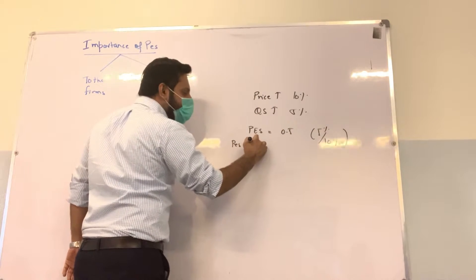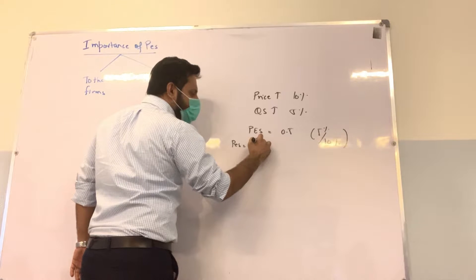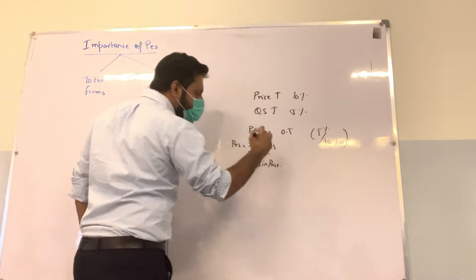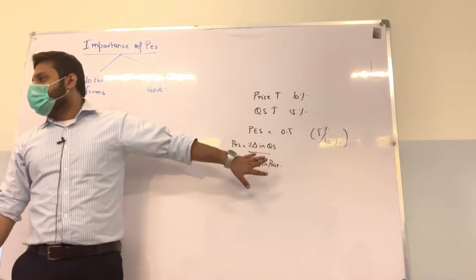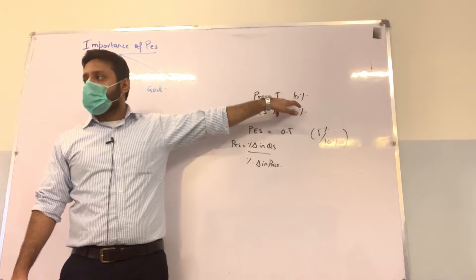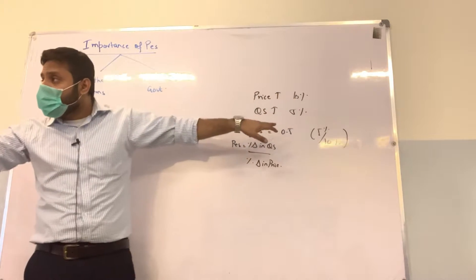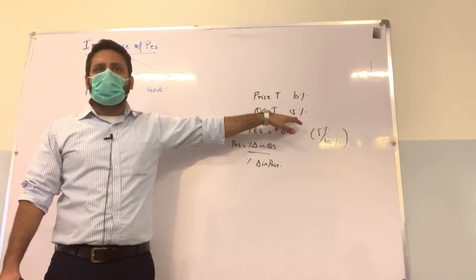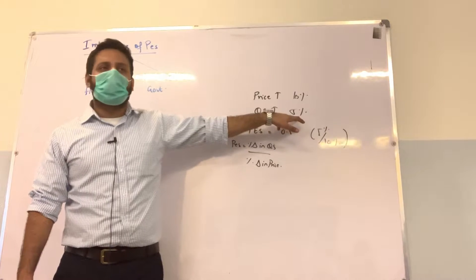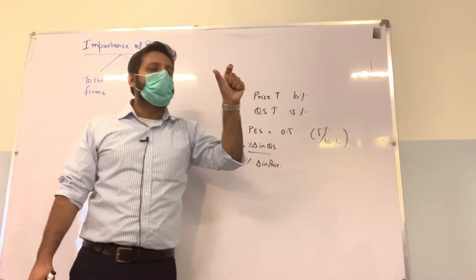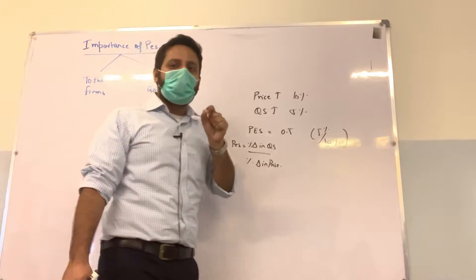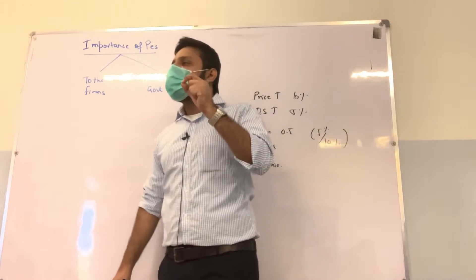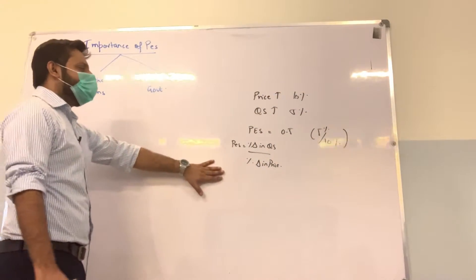The formula for PES is: percentage change in quantity supplied divided by percentage change in price. In this case, the market was willing to pay 10% more, but Mehek was only able to increase production by 5%. This means the supply is inelastic — there is proportionately less response in quantity supplied than the change in price.